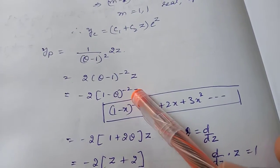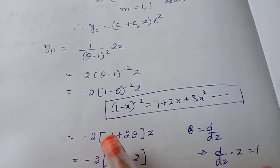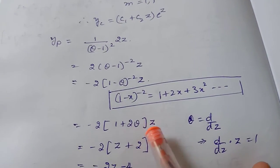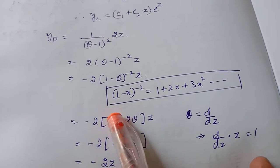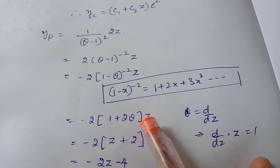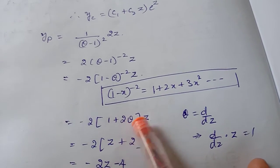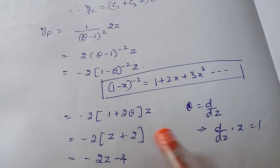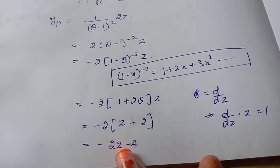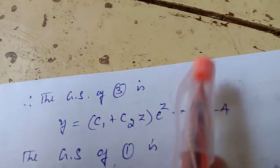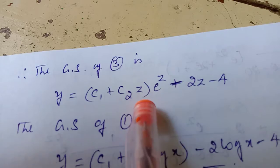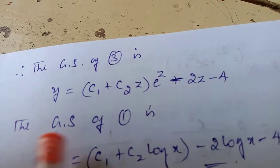Here we have only one variable, so we take only up to the theta term. Multiplying through, we get 2 times z, and theta acting as d by dz on z gives 1. So the particular integral is 2z minus 4. The general solution for equation 3 is y equal to yc plus c2 z e power z minus 2z minus 4.